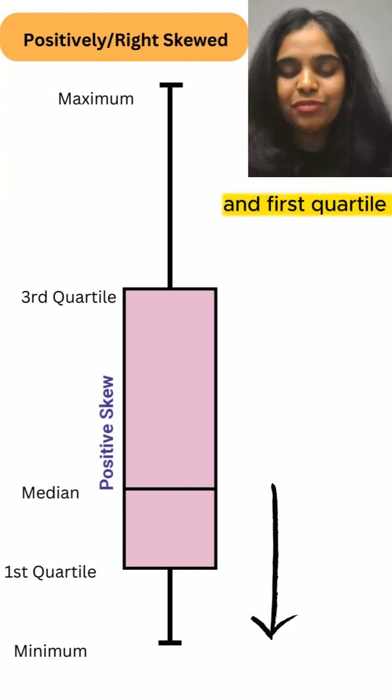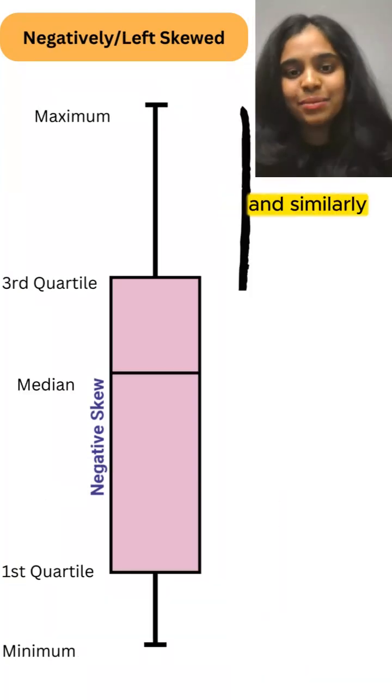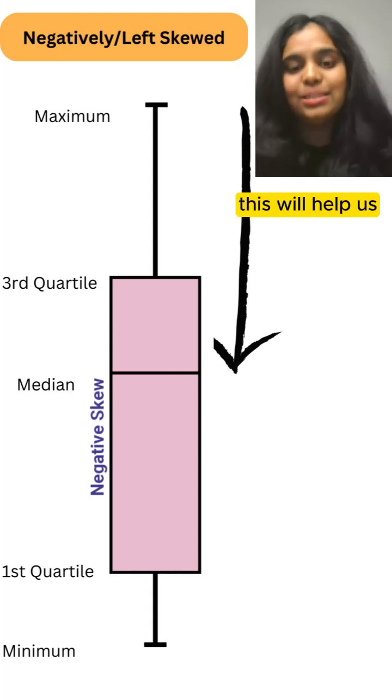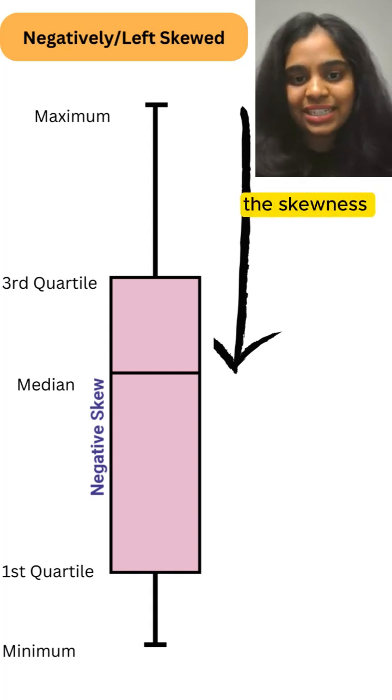Similarly, to say that the data is negatively skewed, we compare the maximum data point and third quartile from the median distance. This will help us not just understand the skewness in the data but also the overall spread of our data.